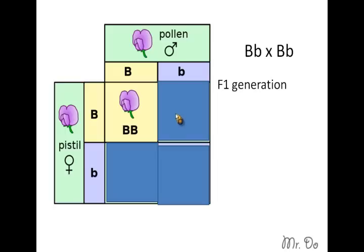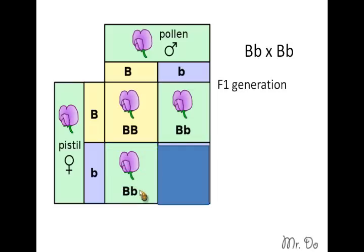For this one over here, it's a big B crossed with a small b. You would get a big B and a small b. Down here, you have a small b crossed with a big B, and you will also have a big and a small. And last but not least, you have a small with a small, then you will get two smalls.